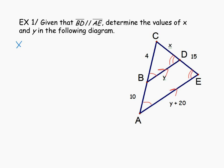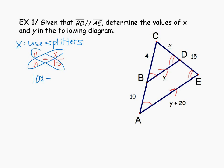To solve for X, we use the splitter theorem. Our proportion is 4 to 10 is proportional to X to 15. To solve for X we cross-multiply: 10 times X equals 4 times 15, which is 60. Dividing both sides by 10, X equals 6. We'll put that measurement of 6 in the diagram.